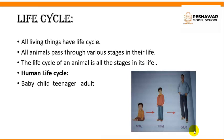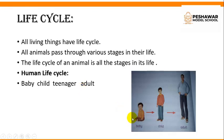First of all, we will take an example of the human life cycle. You will see in this diagram that there are different stages in human life. A baby develops into a child, then it grows into a teenager, and then an adult young man. These are the different phases or stages of human life.